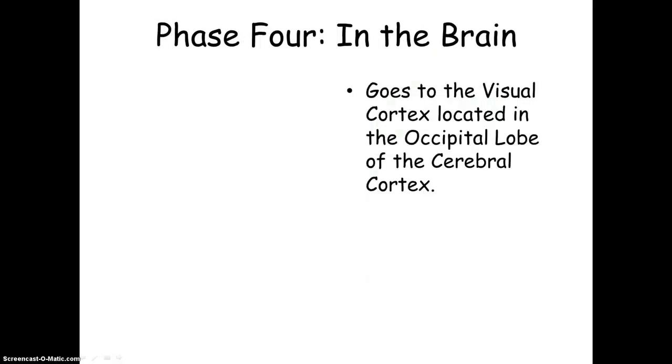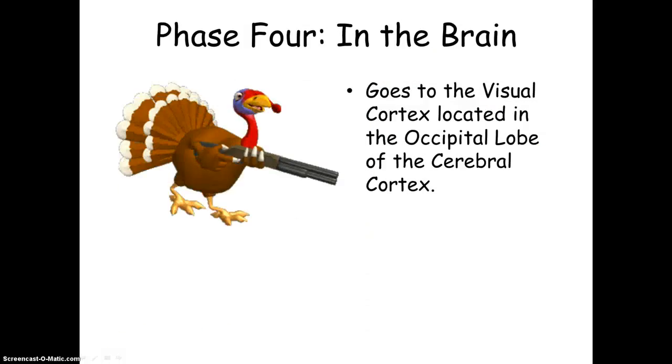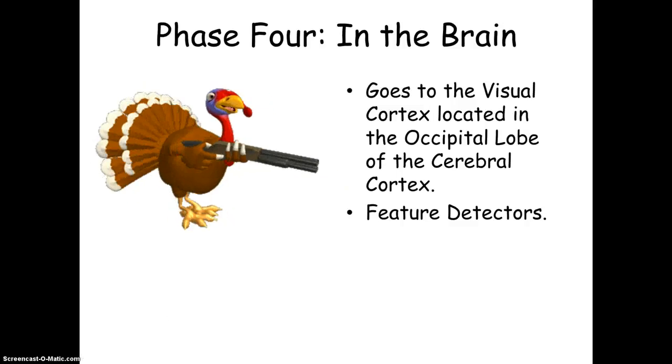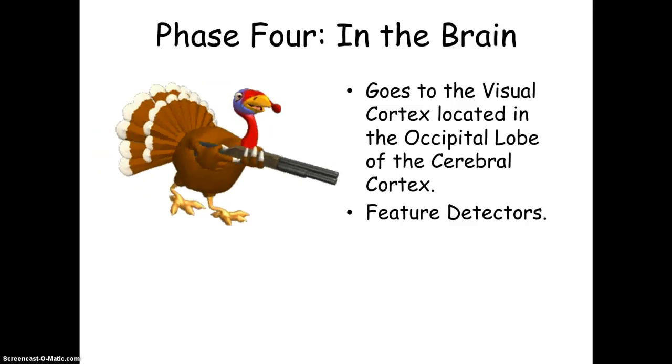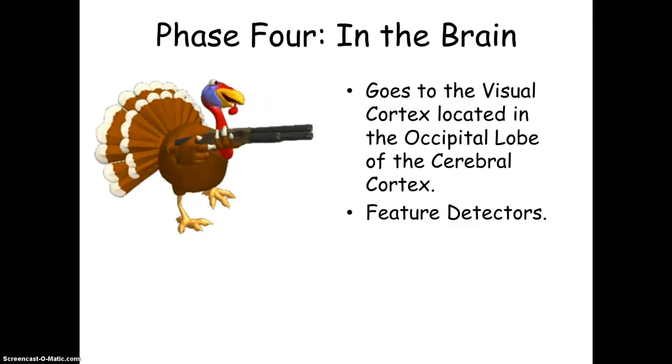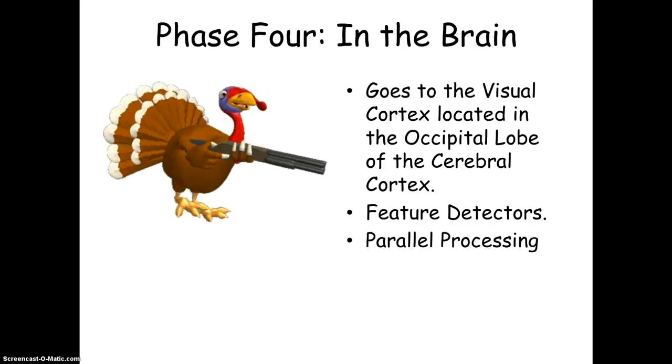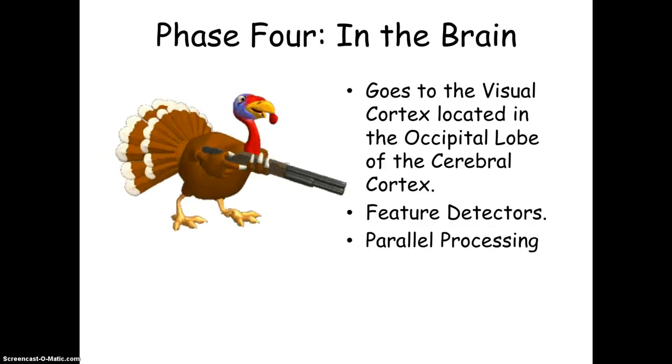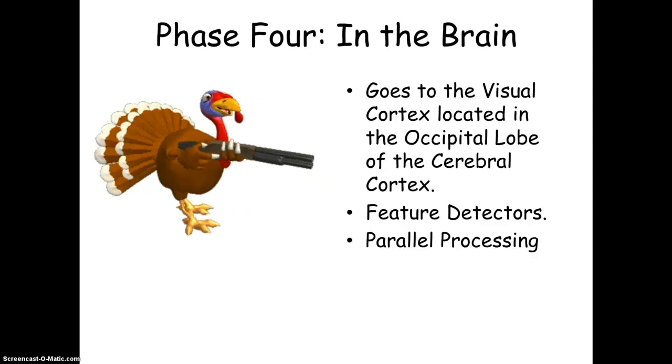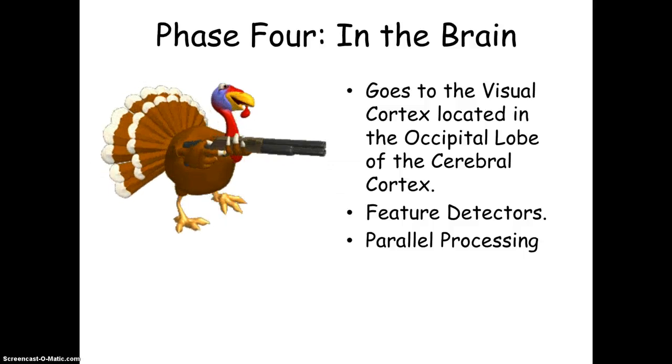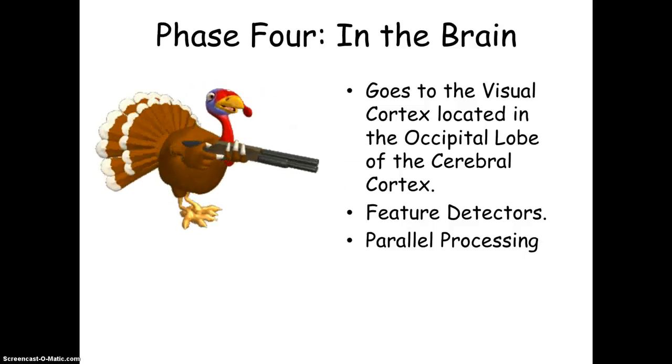So then we have the final phase of vision in the brain. So that information goes to the visual cortex. And you have feature detectors. These are specific areas of the brain that respond to specific things. So one name you want to remember here regarding feature detectors are the names David Hubel and Torsten Weisel.